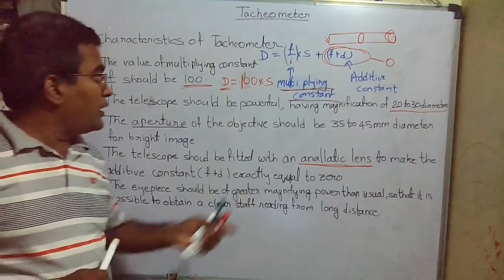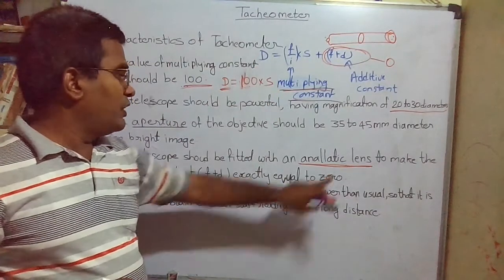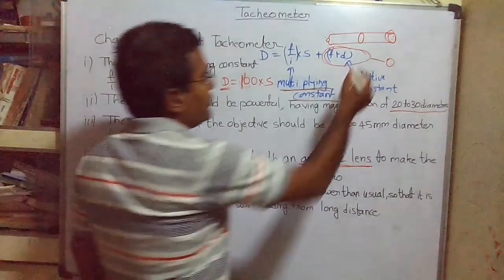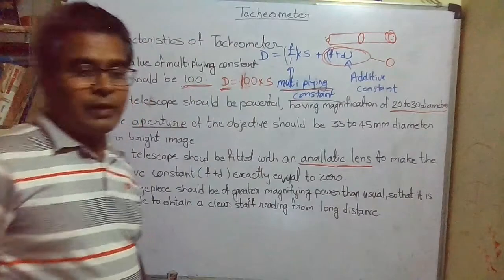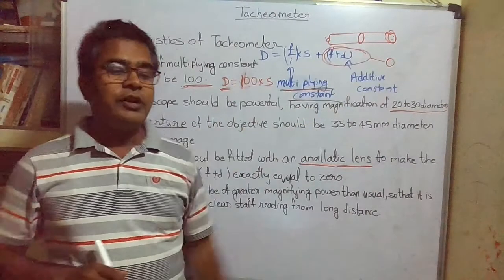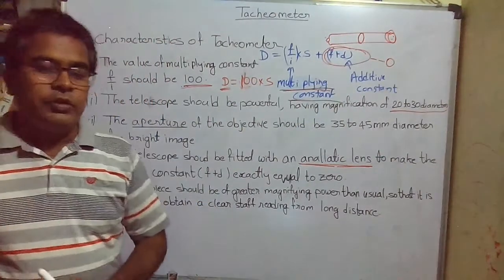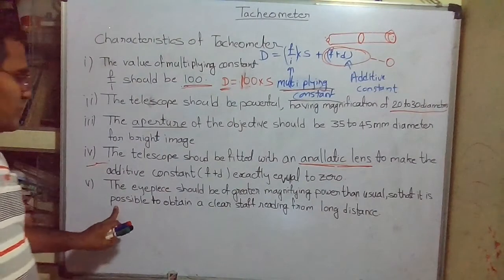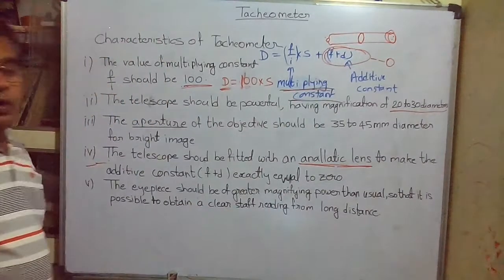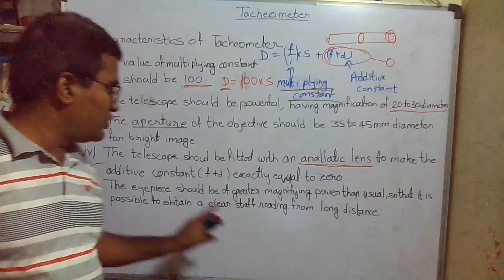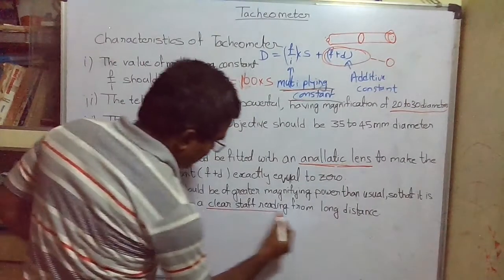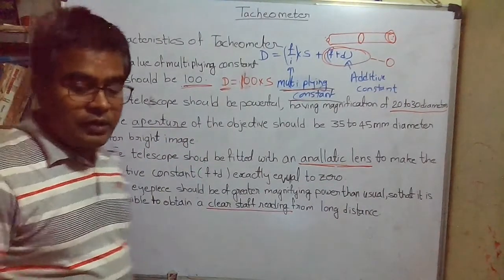There is one disadvantage of the analytic lens: it reduces the brightness due to absorption of light. It is generally provided with the external focusing telescope. The fifth characteristic is that the eyepiece should have greater magnifying power, so that it is possible to obtain a clear staff reading.